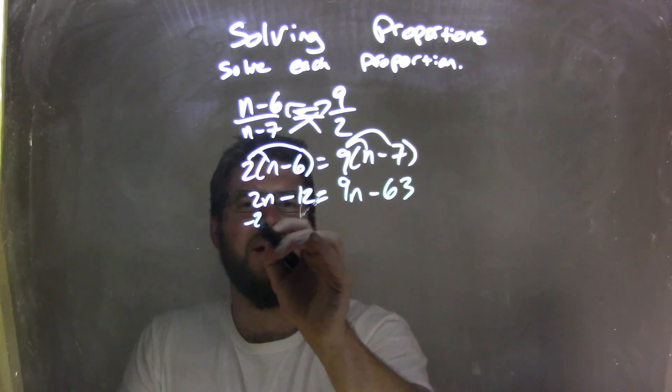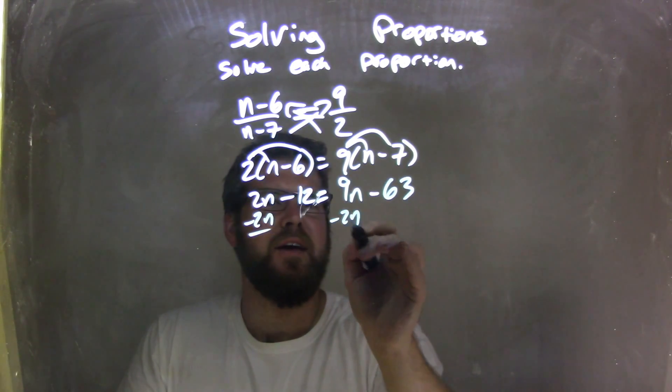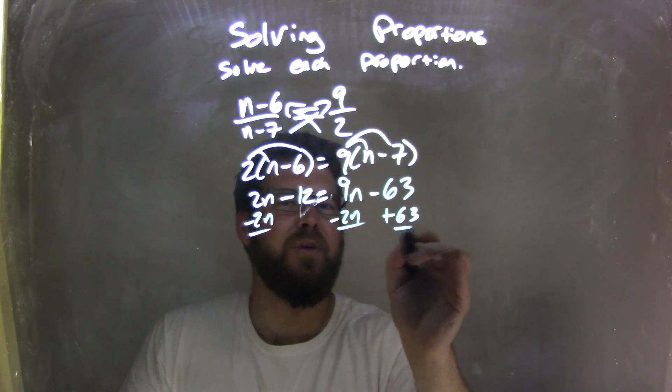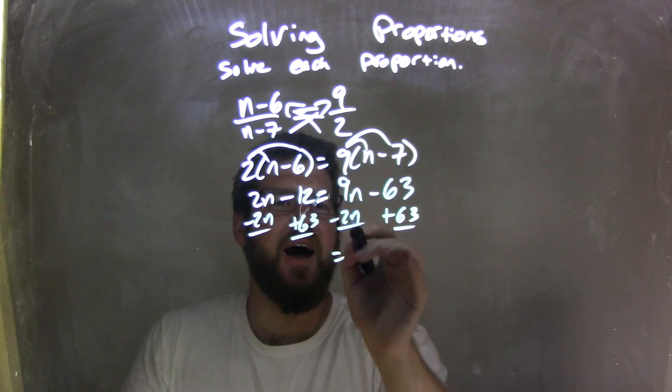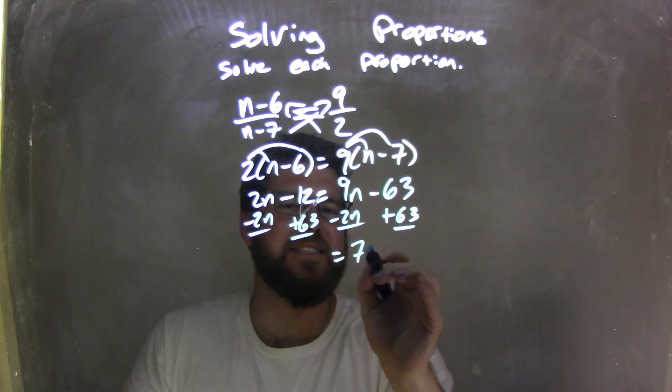So I'm going to bring my like terms together, so I'm going to subtract the 2n from both sides here. And I'm going to add 63 to both sides. So that leaves me on the right, 9n minus 2n, which is 7n.